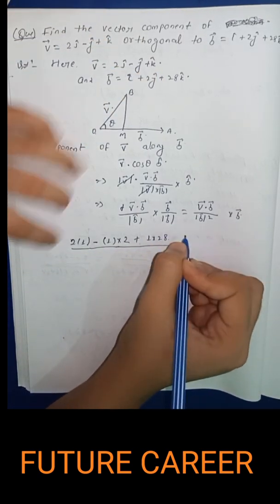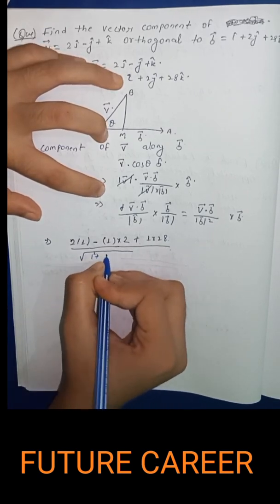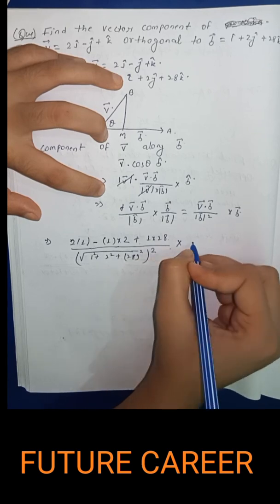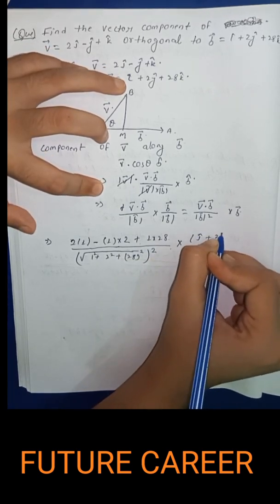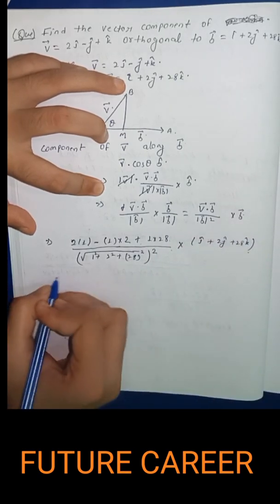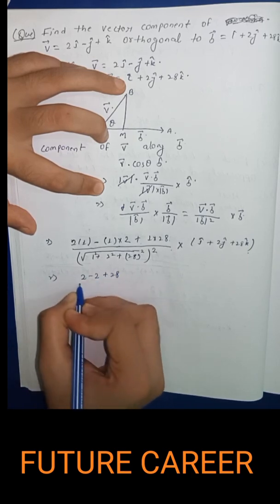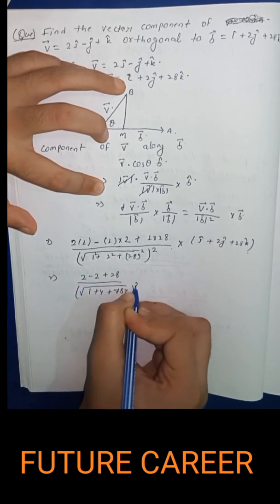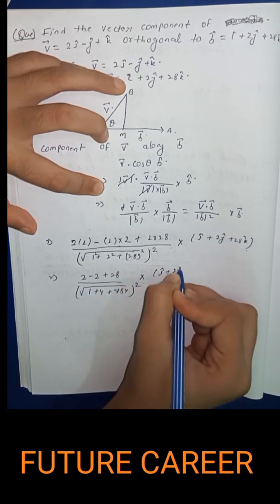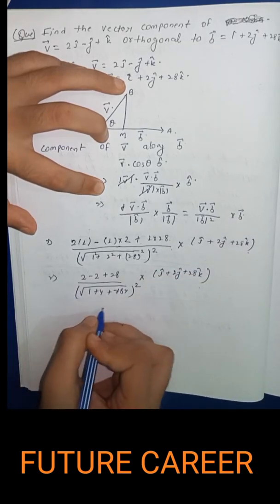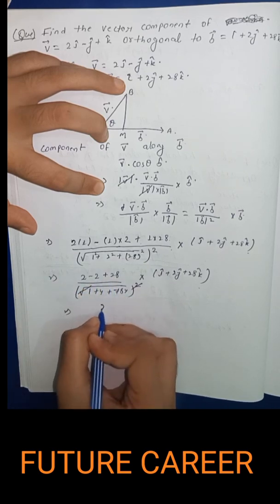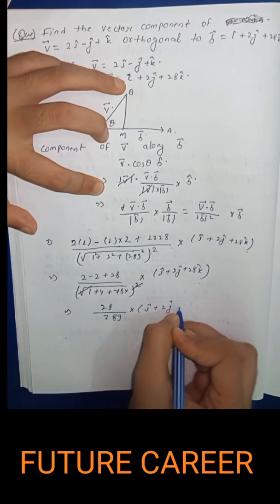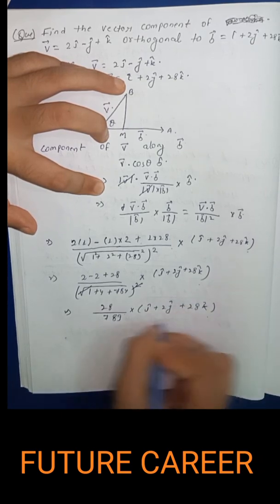Substituting values: 1 plus 2 squared plus 28 squared gives the magnitude squared into b vector. The dot product v dot b equals 2 minus 2 plus 28, which is 28, upon square root of 1 plus 4 plus 28 squared, into i cap plus 2j cap plus 28k cap. Simplifying, the square root cancels and we get 28 upon 789 into i cap plus 2j cap plus 28k cap.